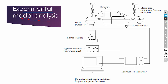Experimental modal analysis means experimentally identifying the natural frequency. The automobile is supported on elastic cords or springs to provide free movement to the structure — if the car is placed on the floor, the floor absorbs some vibration. A vibration transducer or accelerometer is placed on the structure. The output of the accelerometer is given to a spectrum analyzer, and the output of that is given to a computer and also to a power amplifier, whose output drives the exciter.